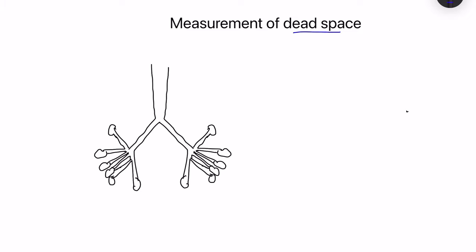Dead space is the space in the respiratory system where no gas exchange takes place. When we inhale, air goes into the respiratory passages and via the respiratory passages it enters into the respiratory unit, which consists of respiratory bronchioles, alveolar ducts, and alveolar sacs. It is in this respiratory unit that gas exchange takes place.